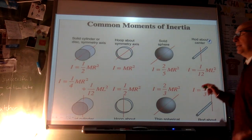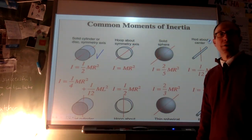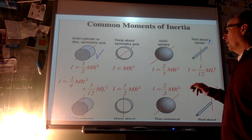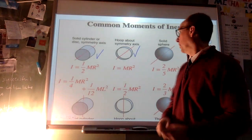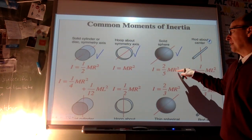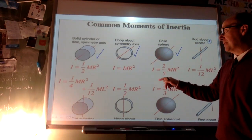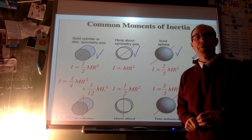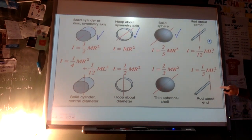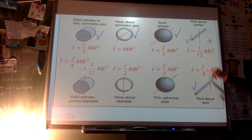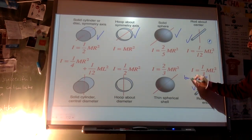Moment of inertia formulas for common shapes: a disc or solid cylinder is ½mr². A hoop about its middle is mr² — same as the generic point-mass formula because all the mass is at r. A solid sphere is 2/5 mr², very close to the cylinder so they nearly tie in a race. For rods: rotating about the middle gives 1/12 ml², rotating about an end gives 1/3 ml² — that's the one for blades or swinging a bat.